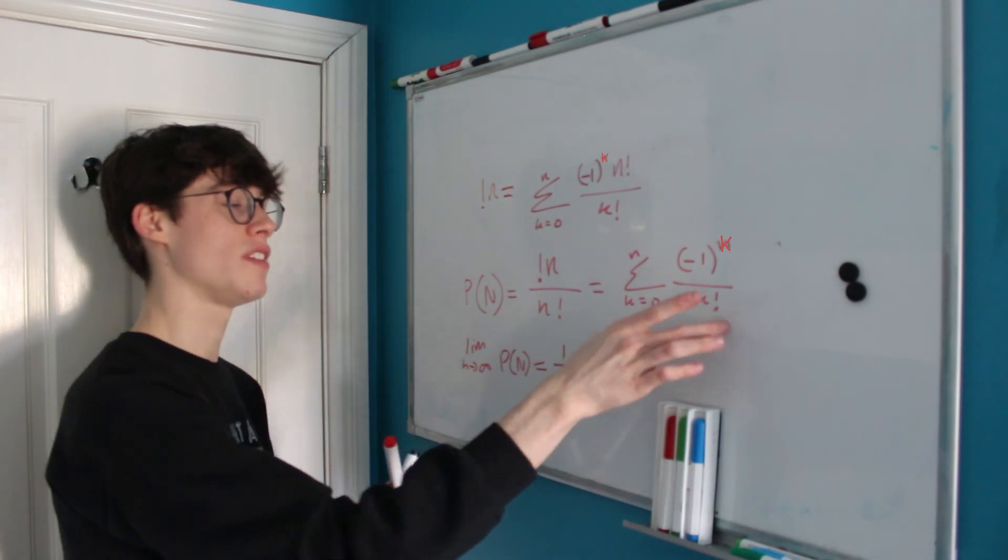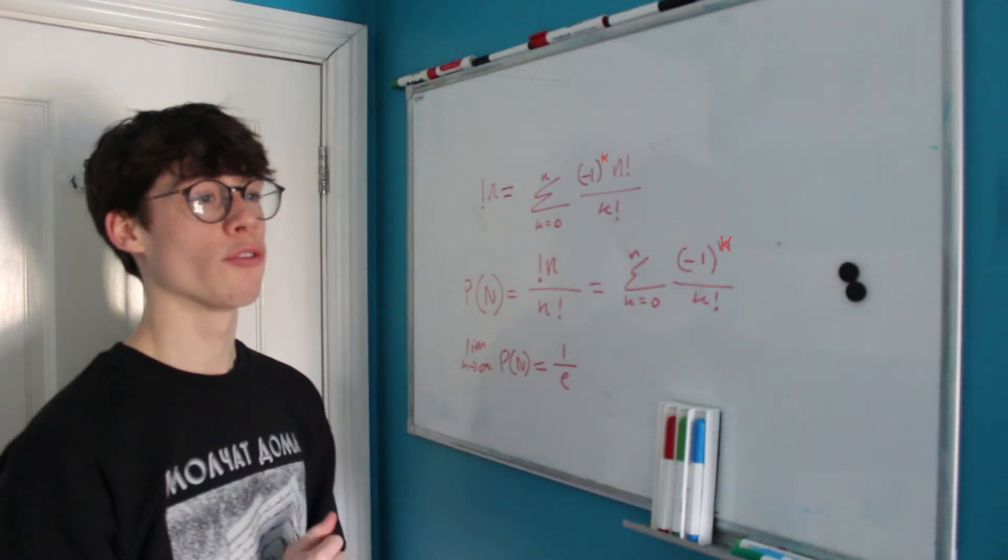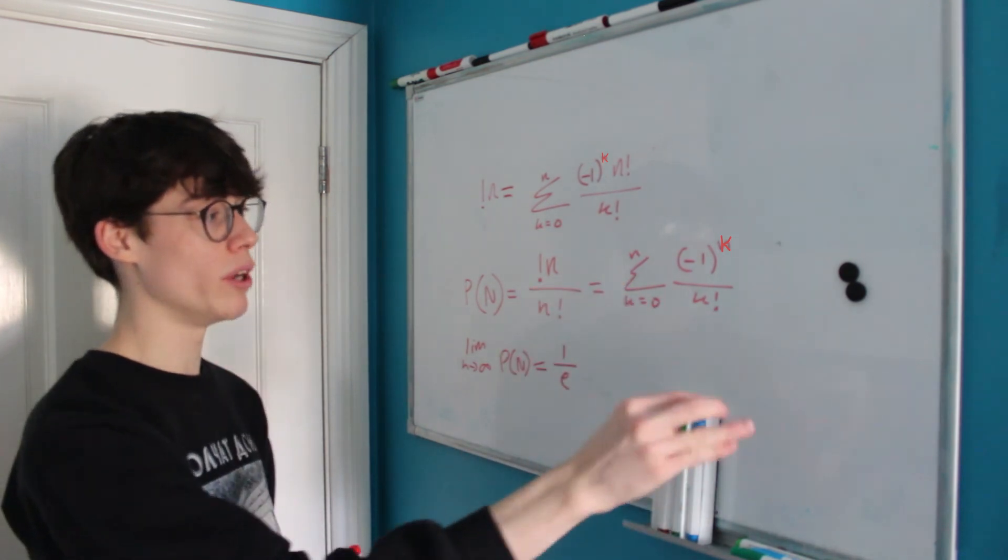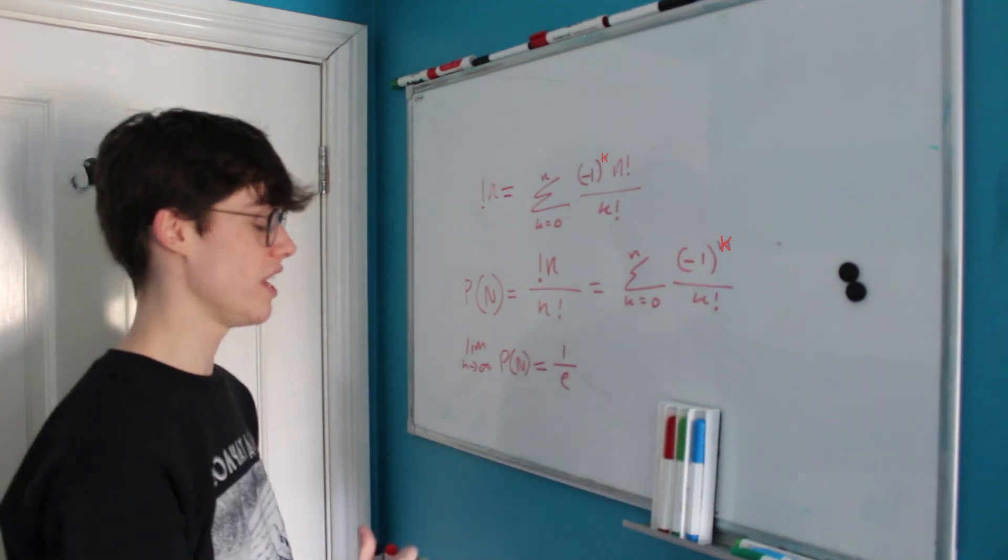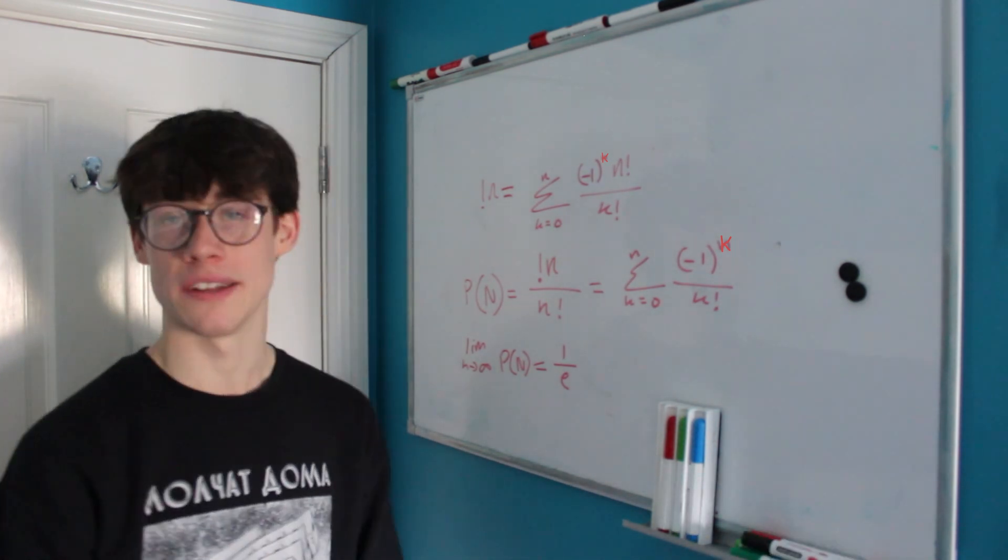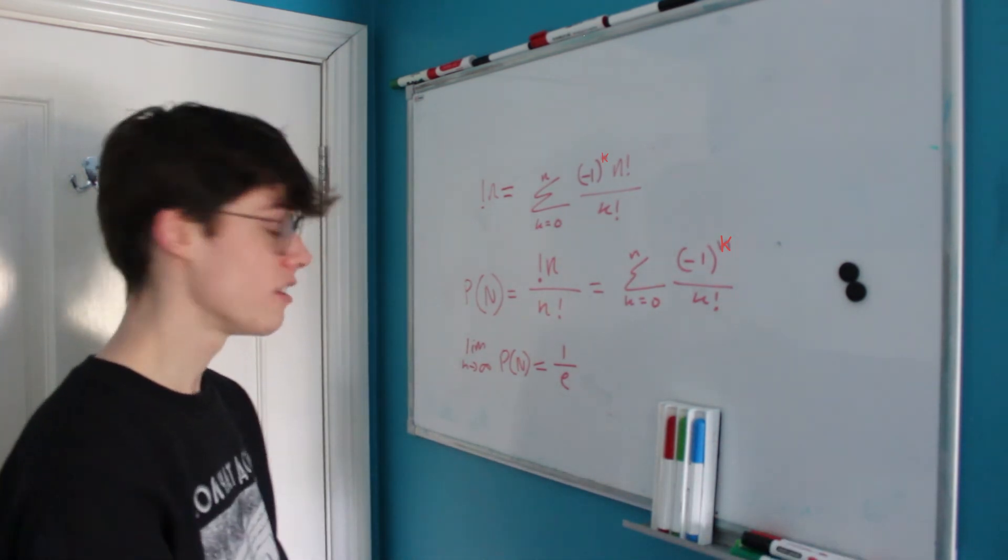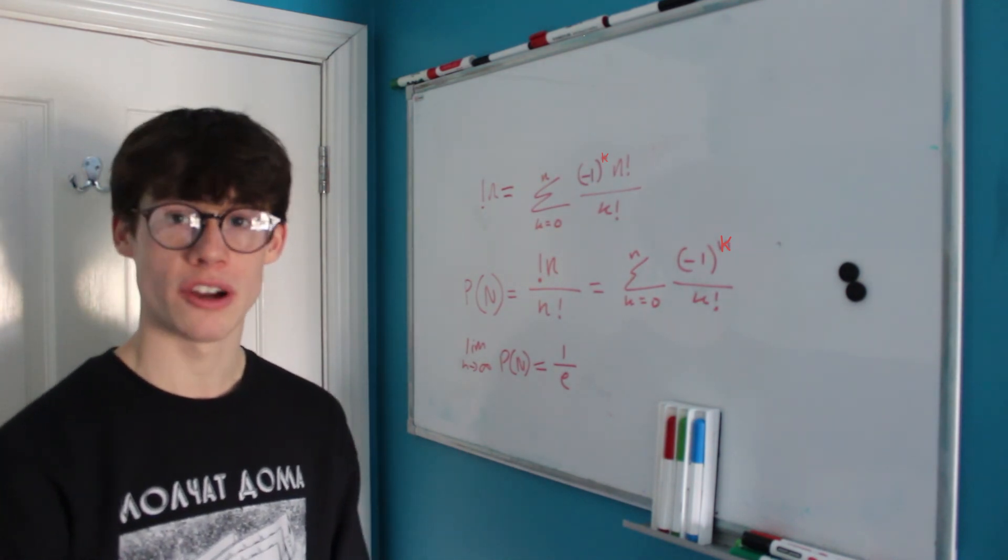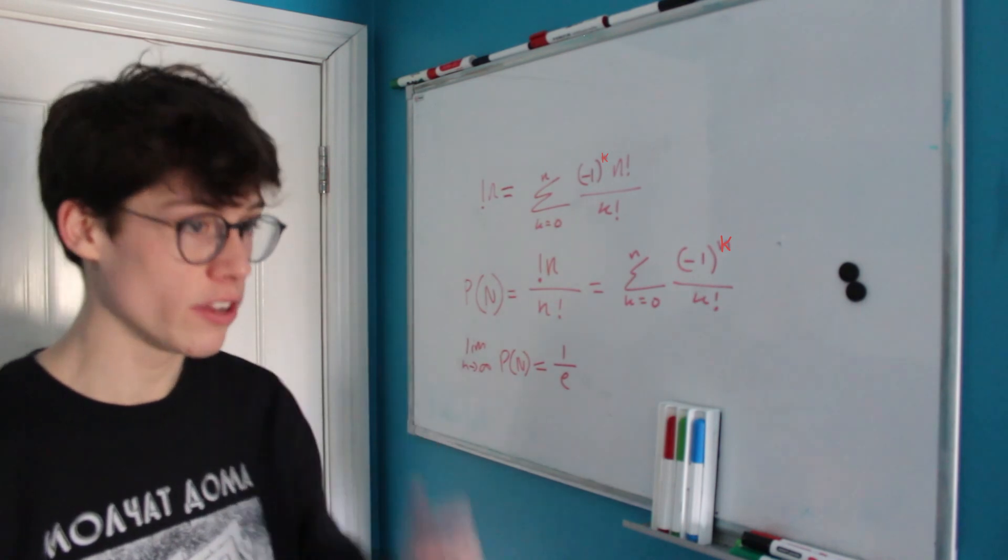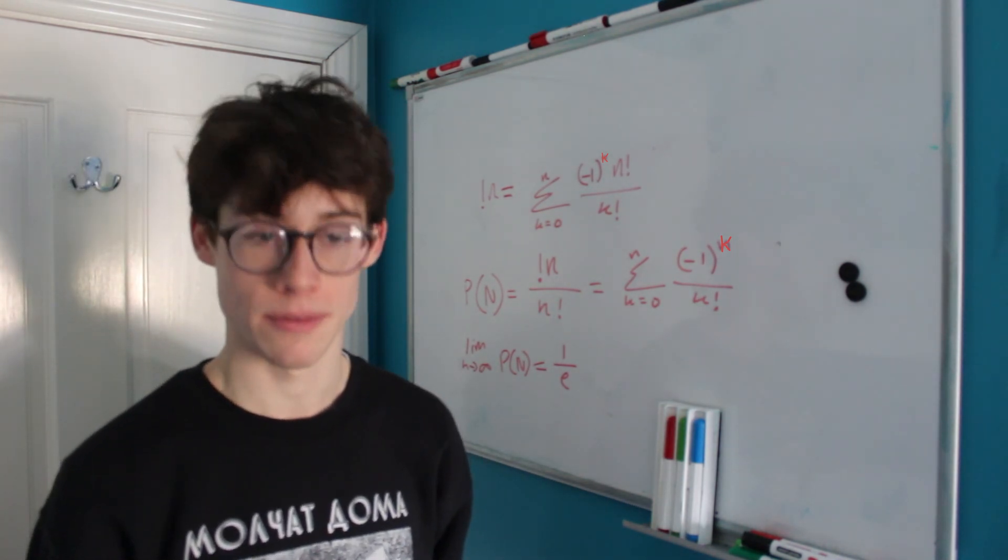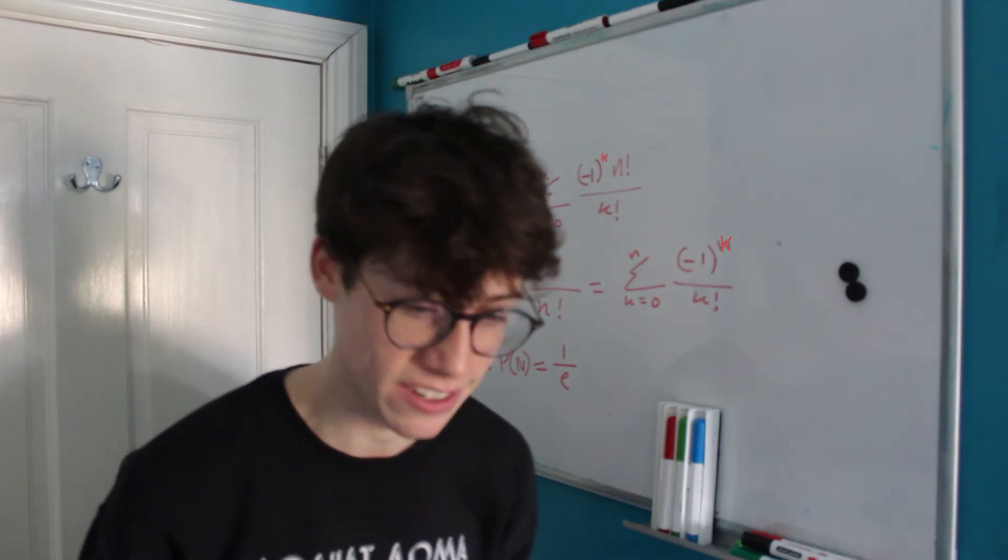And that's just due to how similar the Maclaurin series of e to negative one is to our expression here and I thought this was a really lovely result. It's quite beautiful and you wouldn't expect it to show up. It's just nice how e somehow manages to show up everywhere. I hope you guys enjoyed this video. It's kind of different to the last few videos I've been making so let me know what you thought and if you have any suggestions then please comment down below. Thanks a lot for watching, see you later.